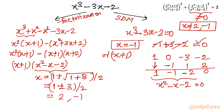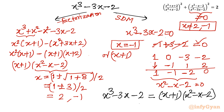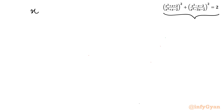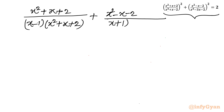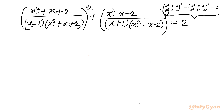Writing the full factored forms: the first denominator is (x - 1)(x² + x + 2) and the second is (x + 1)(x² - x - 2). Substituting into the original equation, we see that (x² + x + 2) cancels from the first term and (x² - x - 2) cancels from the second term. The equation reduces to (1/(x-1))² + (1/(x+1))² = 2.